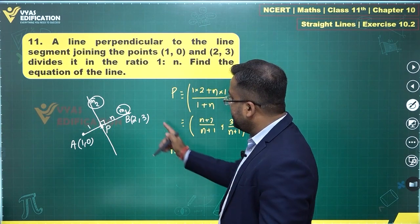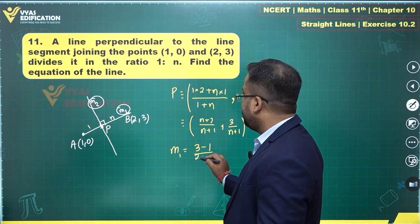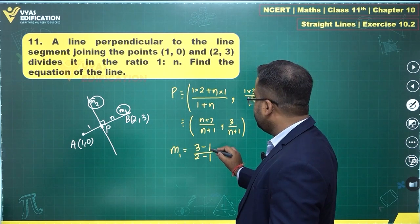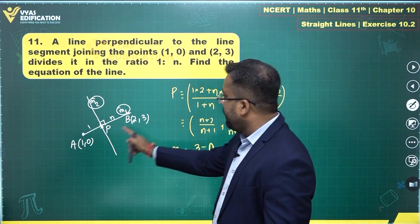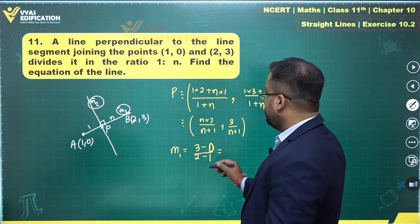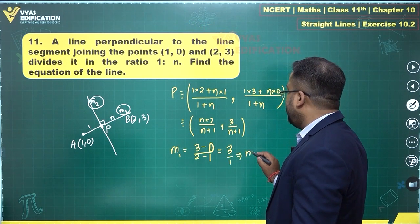m1 is slope of this line which is y2 minus y1 upon x2 minus x1: 3 minus 0, mind you this is 3 minus 0, 2 minus 1. This is 3 upon 1 which tells me m1 is equal to 3.